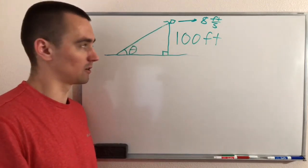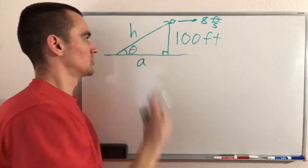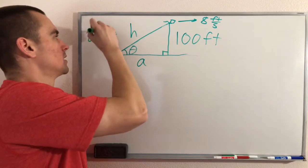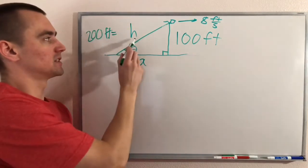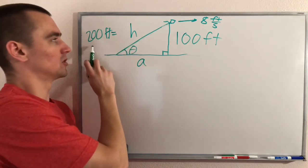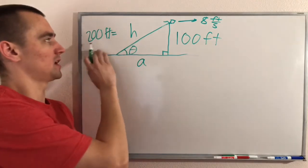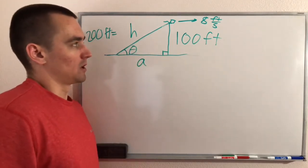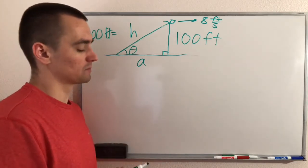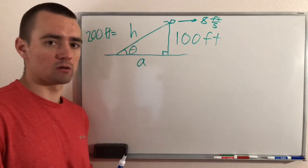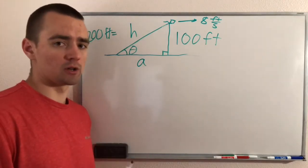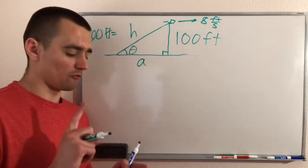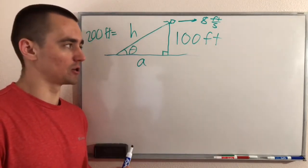The 100-foot side is a constant, not a variable. The horizontal side and the hypotenuse (the string) are both going to be changing, so we use variables for those. Let's call the horizontal side 'a' and the string length 'h'. The last piece of information is that we're looking at the instant when h is 200 feet — so h is a variable, but at this specific instant it equals 200.